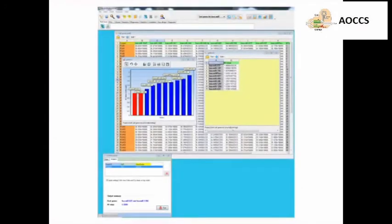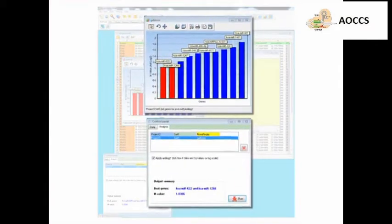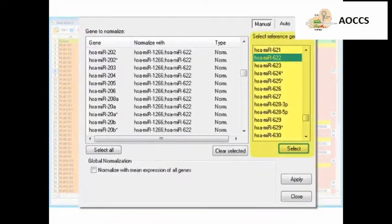Define reference genes by selecting a list of microRNAs that have similar CQ values across all samples, and run GNorm. Next, normalize the data using the obtained reference genes. The resulting values will correspond to the Delta CT.